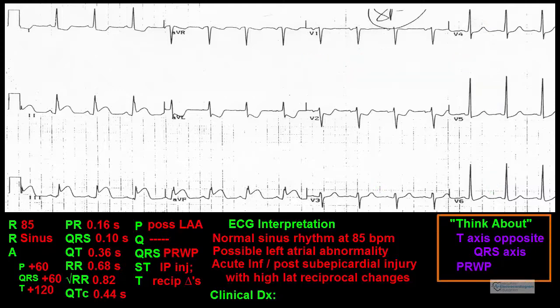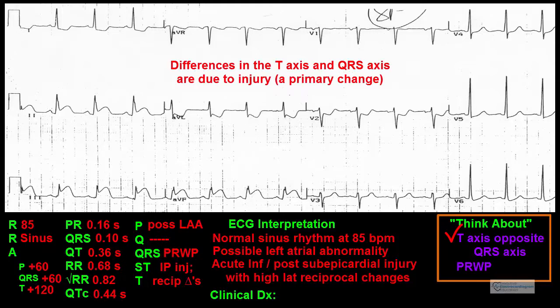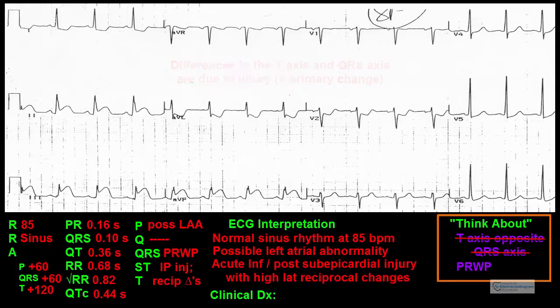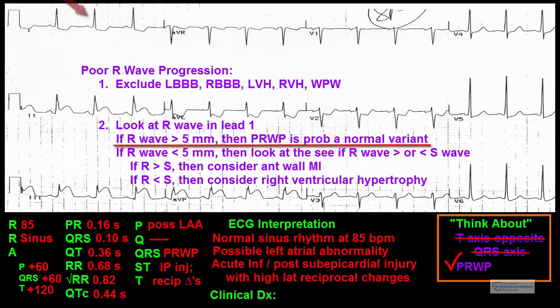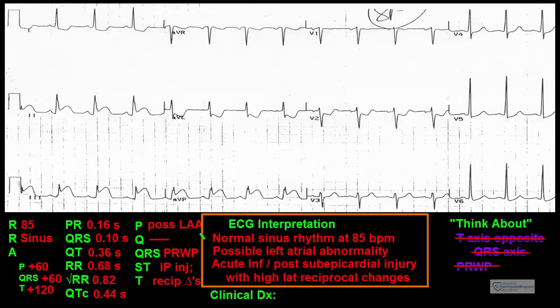We now go back to the think-about column. In this case, the differences in the T wave axis and the QRS axis are due to the injury and reciprocal changes in the inferior, posterior, and high lateral leads. This is a primary event, not secondary, and is already accounted for. The poor R wave progression is likely a normal variant, as the R waves in lead V1 are greater than 5 mm tall — no further comment is needed. Our final electrocardiogram diagnosis is normal sinus rhythm, possible left atrial abnormality, and acute inferior and posterior subepicardial injury with reciprocal changes.